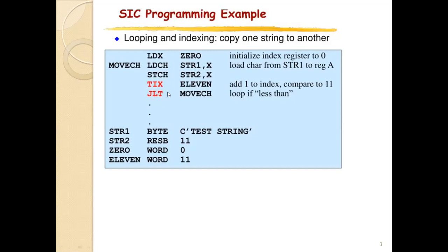To test the condition code, use the JLT instruction — jump if less than. If the new index value is less than 11, that means not all 11 bytes have been copied and there are still bytes remaining. Jump to the loop label MOVECH, which is the label given to the LDCH instruction, to copy the next byte from STR1 and store it into STR2. This loop repeats until all 11 bytes are copied to STR2. This is how looping and indexing operations are performed on the standard version of the SIC machine.